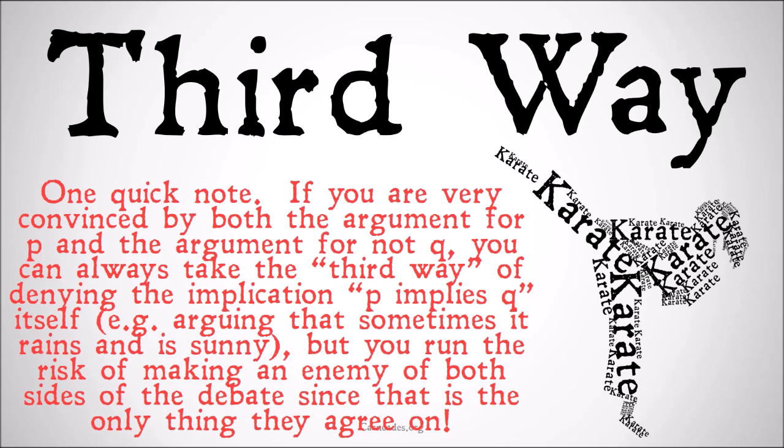One quick note: if you're very convinced by both the argument for P and the argument for not Q, you can always take the so-called third way out of this kind of argument by denying the implication — P implies Q — itself. For example, arguing that sometimes it rains and it is sunny. But you run the risk of making an enemy of both sides of the debate, since that's the one thing — the only thing — that they agree on.